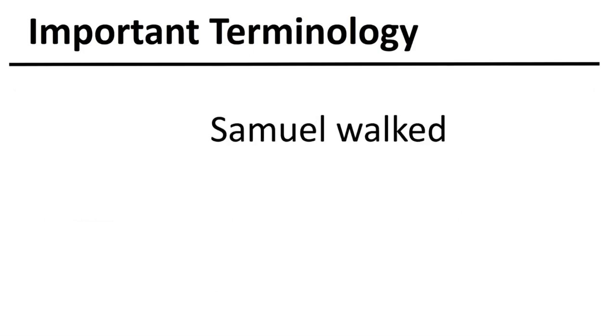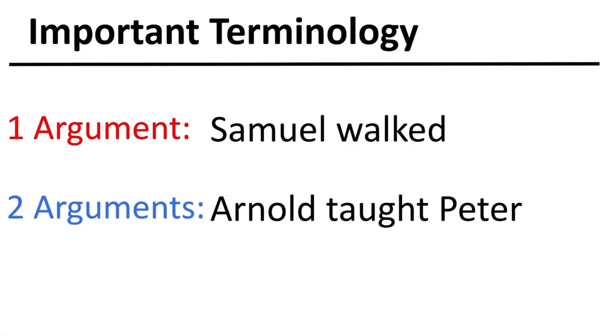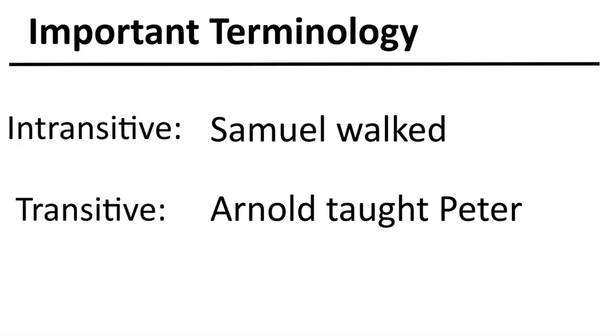Now, let's take a look at these two sentences: Samuel walked and Arnold taught Peter. What do you notice about these sentences? Well, in the first sentence, we can see that there is only one main role or argument, while in the second sentence, there are two main roles or arguments. We will call the sentence with only one main argument an intransitive sentence, and the sentence with two main arguments a transitive sentence.